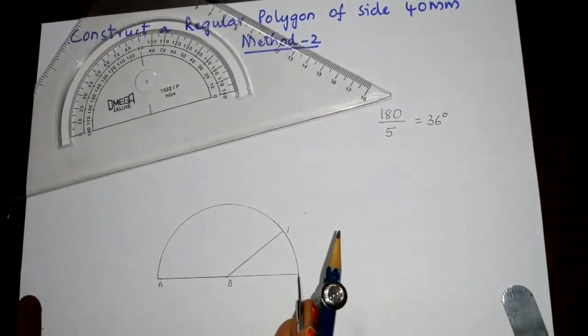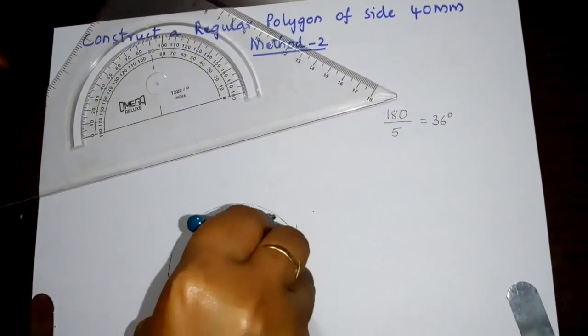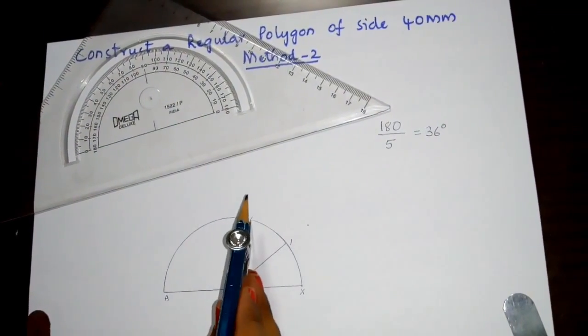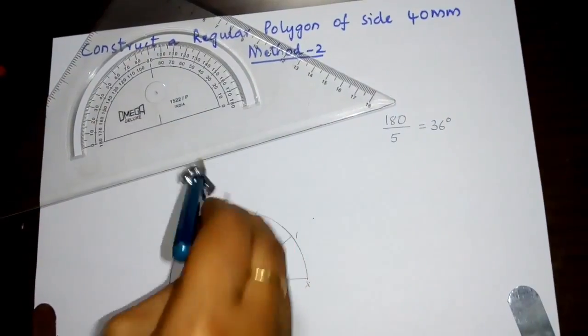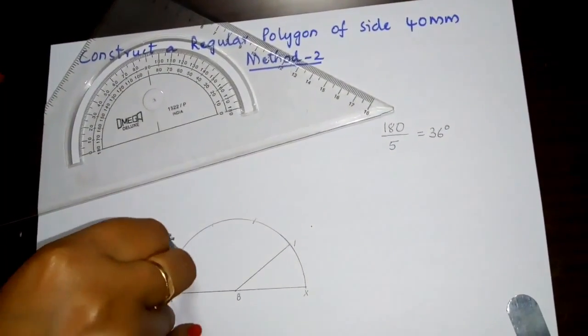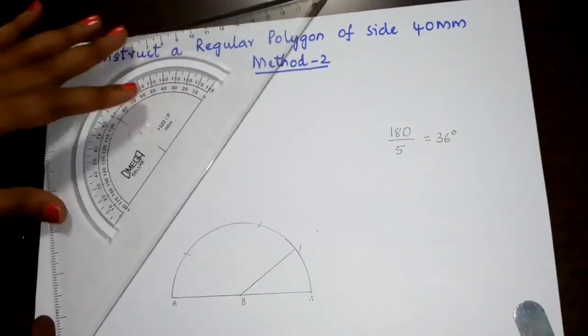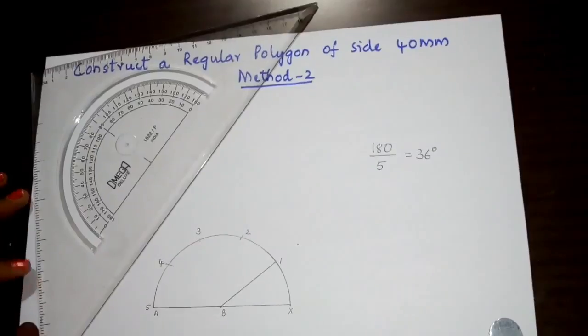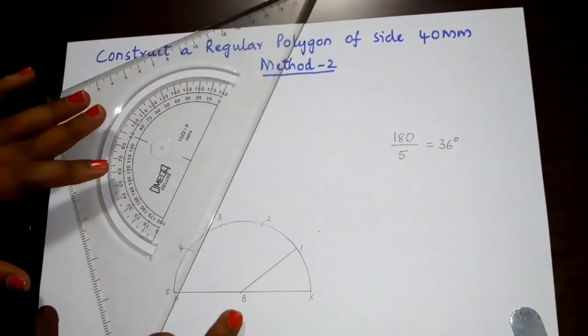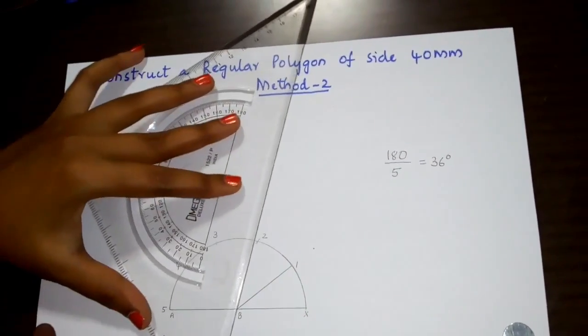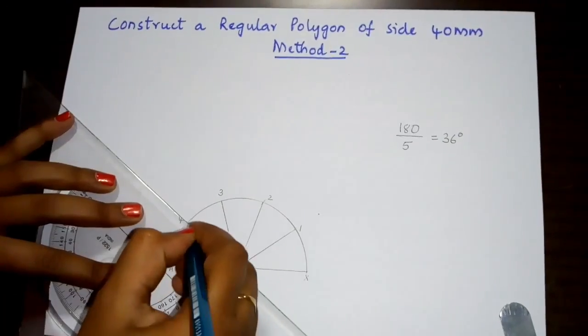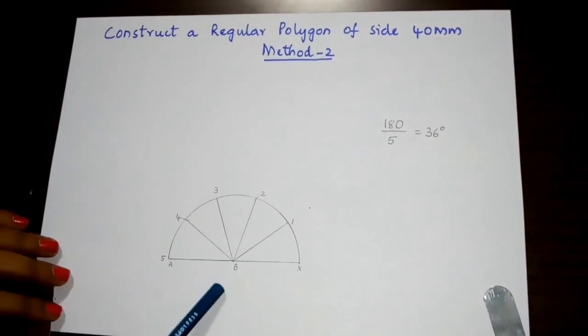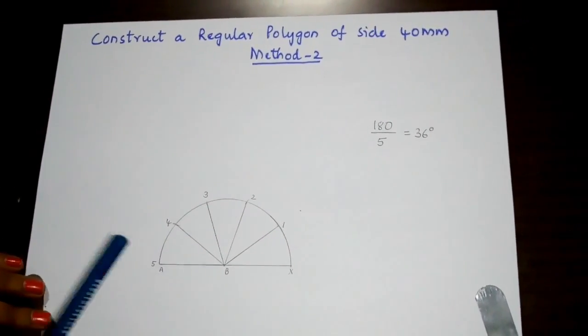Taking X1 as radius, mark the other 4 points onto the semicircle. Name them as 2, 3, 4, and 5. Now join B to 2, B to 3, and B to 4. We have now divided the given semicircle into 5 equal parts, as we are drawing a pentagon.